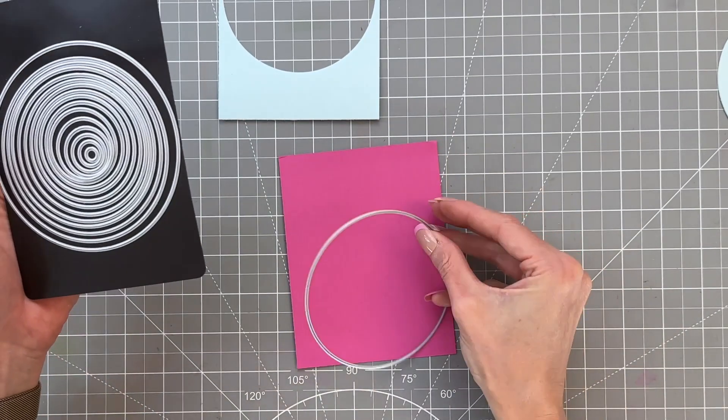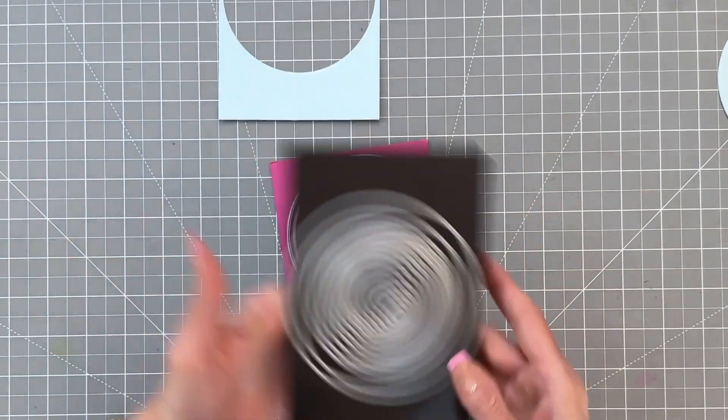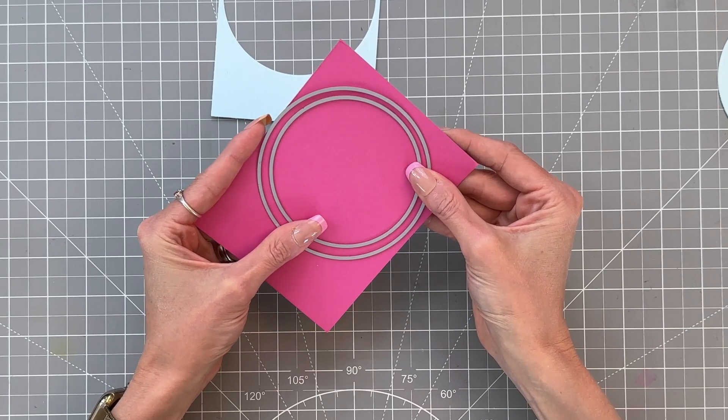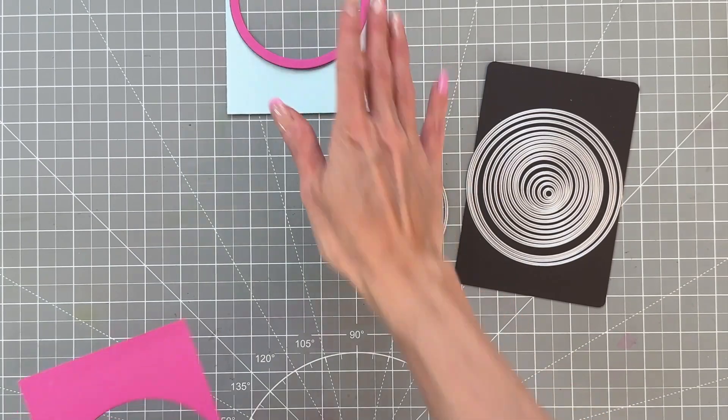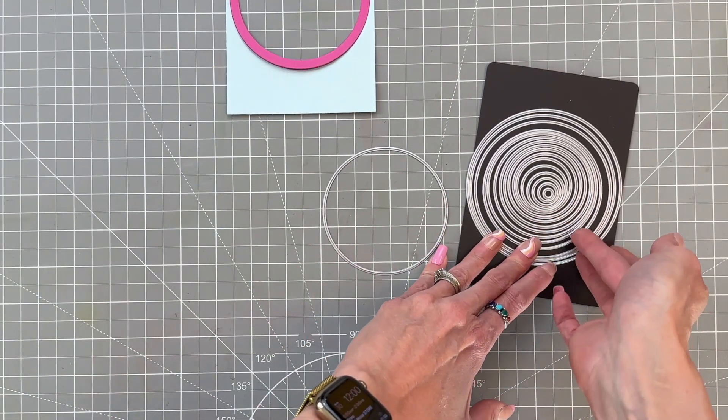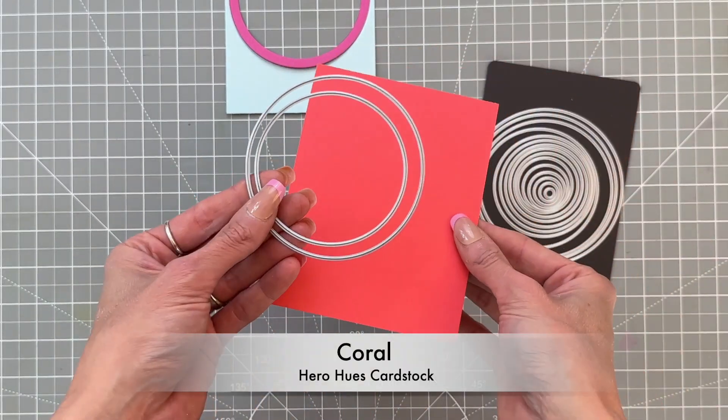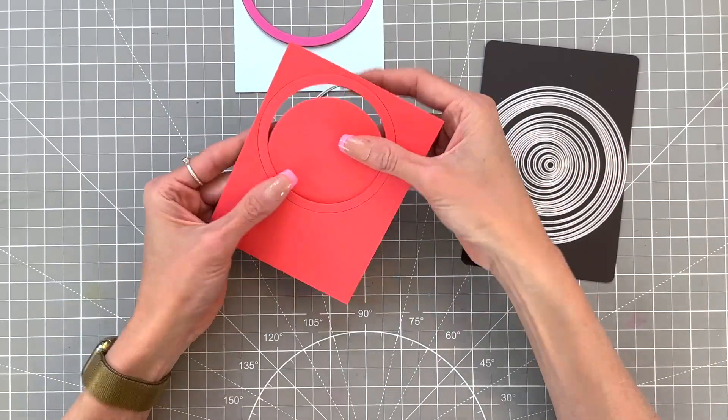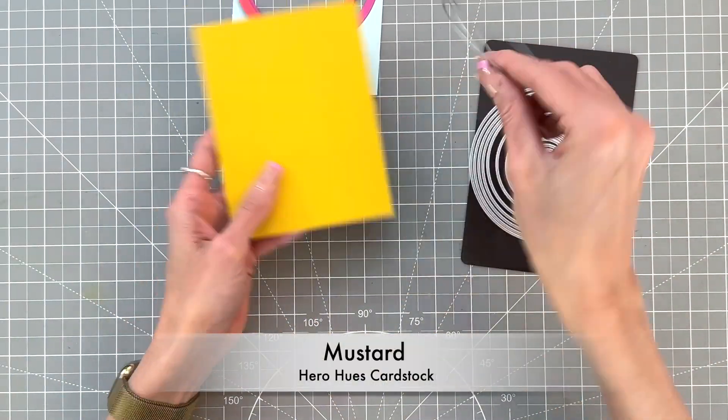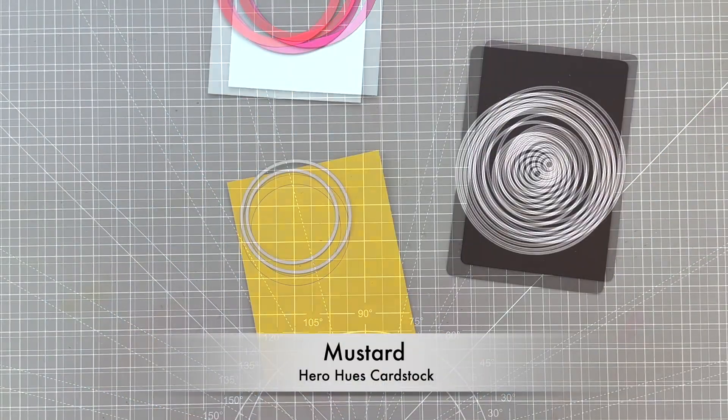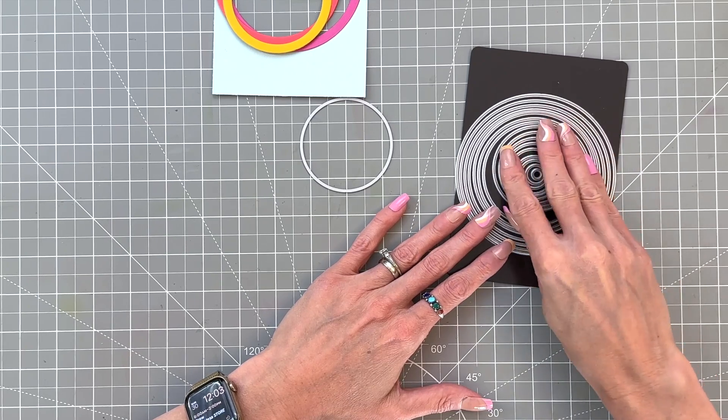Now I'll grab the second largest die and the fourth largest die and die cut a ring from ultra pink cardstock. I'm just going to eyeball the space between the two, but it will end up cutting a quarter-inch width ring. We're going to keep that smaller die—the fourth largest—and now grab the sixth largest die and die cut another ring, a smaller ring, out of coral cardstock. Next, my rings will be die cut out of mustard cardstock, which happens to be one of my favorite colors from Hero Arts.